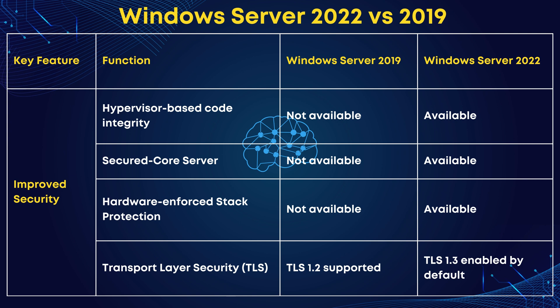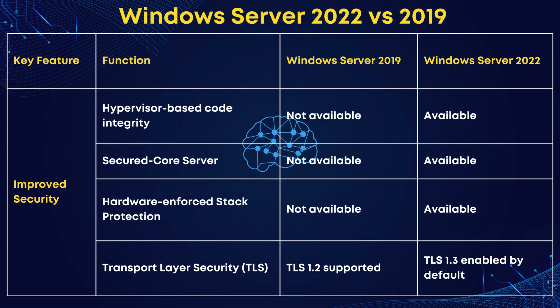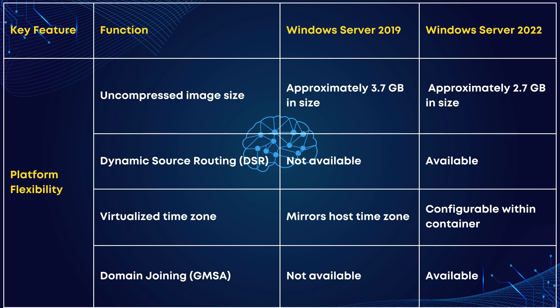Now let's talk about transport layer security. TLS plays a critical role in ensuring secure communication over computer networks. It encrypts data and maintains the integrity of communications, which is vital for safeguarding sensitive information as it traverses the internet.